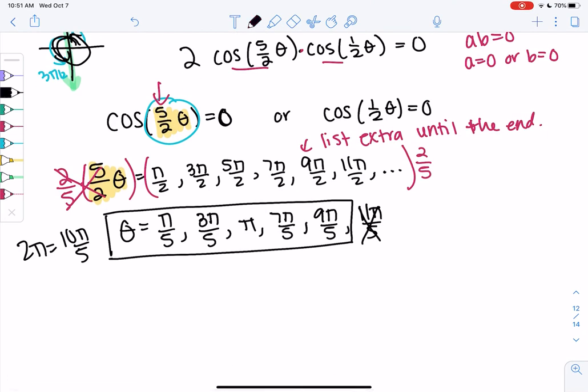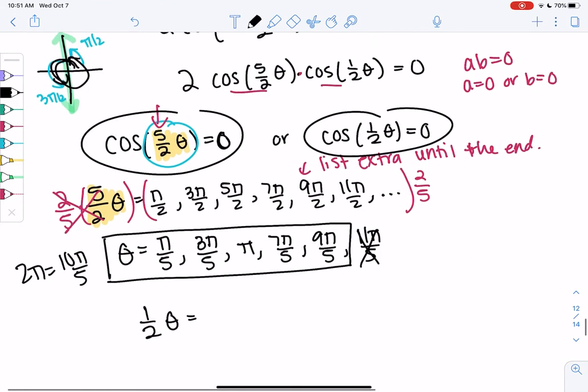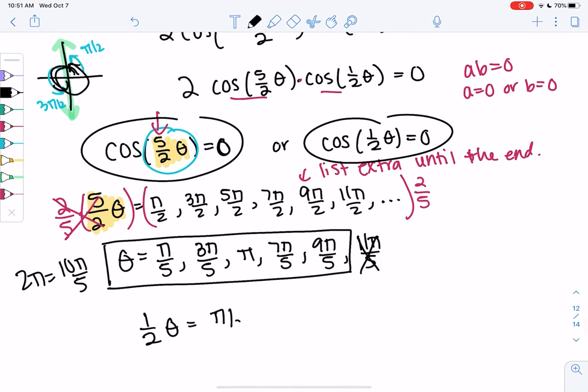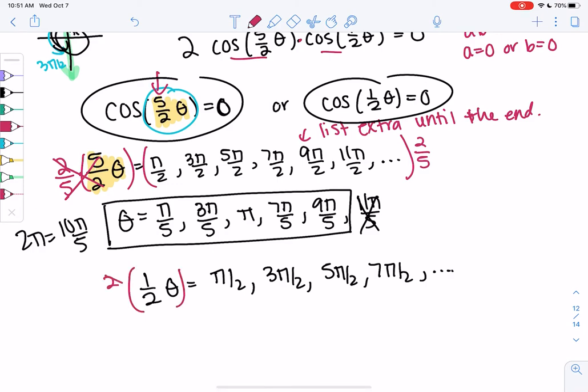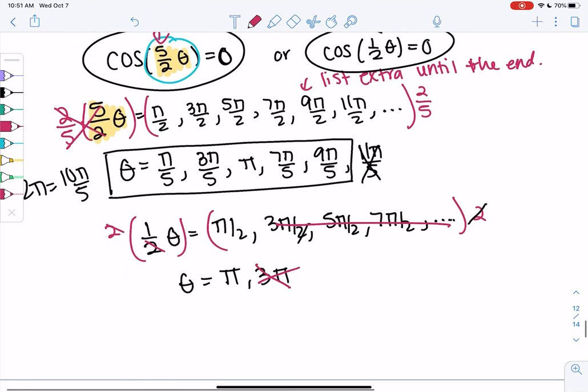All right. We still have to solve the other one. So that only for this. So cosine of 1 half theta equals the same thing. So we'll say 1 half theta. It's the same angles, right? Because it's still equal to 0. So it'll be π over 2, 3π over 2, 5π over 2, 7π over 2. And I'm going to list out less. You'll see we don't need them. And so this one, I'm actually going to multiply by 2 to solve. So theta equals π. Theta equals 3π. Is 3π bigger than 2π? Yeah. So this one, we're done. Right? Those will all be bigger as well. So our final solution is π.